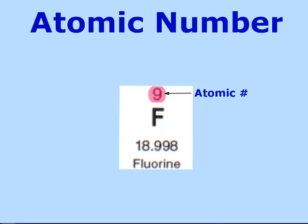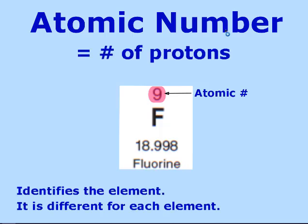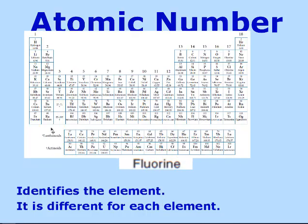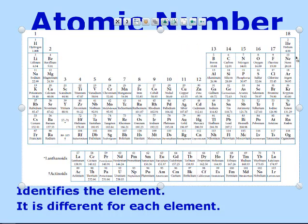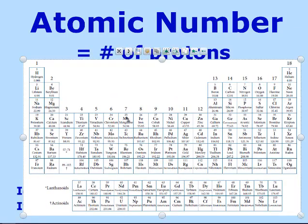When reading the periodic table, one very important number is the atomic number, which is the number of protons. The atomic number is the top number on the periodic table; it identifies the element and is different for every element. The protons determine which element you have — if you change the number of protons, you change the element.